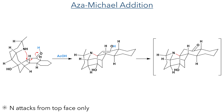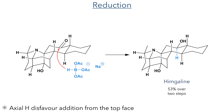To transform GB13 into the target hymgaline, they first carried out an azamycal addition which was promoted by acetic acid. This was a stereospecific reaction as the concave shape of the molecule directs the amine to attack from the top face of the enone, completing all of the bonds required for the cage structure of the molecule. The ketone produced by this reaction was not isolated and instead was directly reduced using sodium triacetoxy borohydride, which added from the bottom face to produce only the desired isomer and complete the synthesis of hymgaline in a 53% yield over two steps.